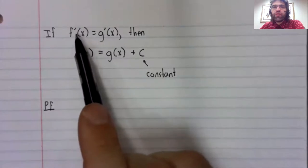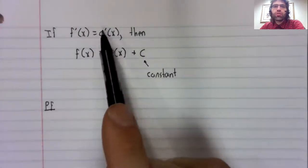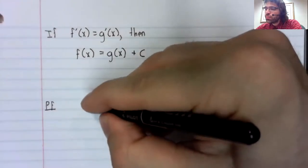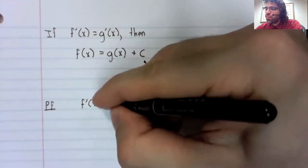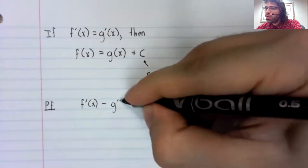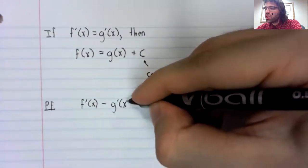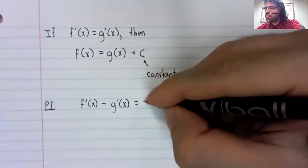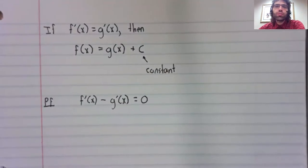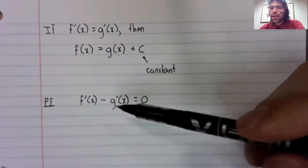If f prime equals g prime, then f prime minus g prime equals zero.